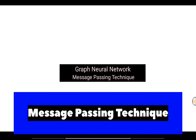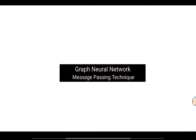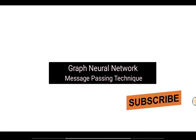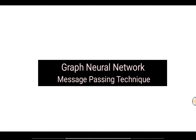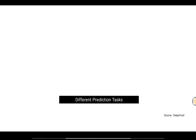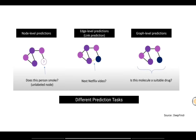In the last episode of this deep learning PyTorch series we started talking about graph neural networks. We generally talked about how a graph looks, how you can define a graph, and what representations for graphs a machine can understand. In this episode I will mainly talk about the message passing technique for graph neural networks.